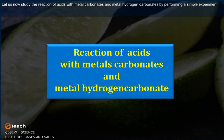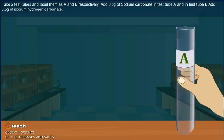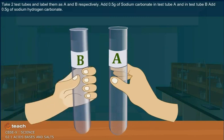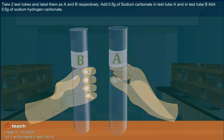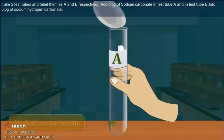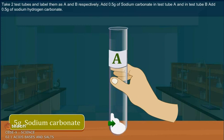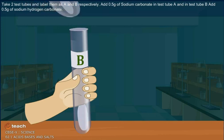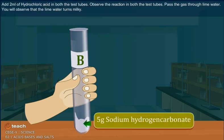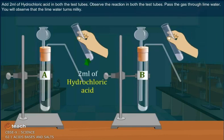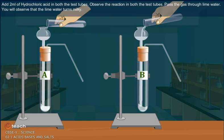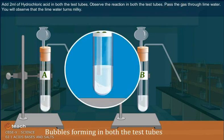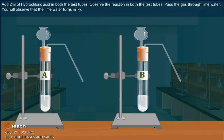Let us study the reaction of acids with metal carbonates and metal hydrogen carbonates. Take two test tubes labeled A and B. Add 0.5 grams of sodium carbonate in test tube A, and 0.5 grams of sodium hydrogen carbonate in test tube B. Add 2 ml of hydrochloric acid to both test tubes and observe the reaction.